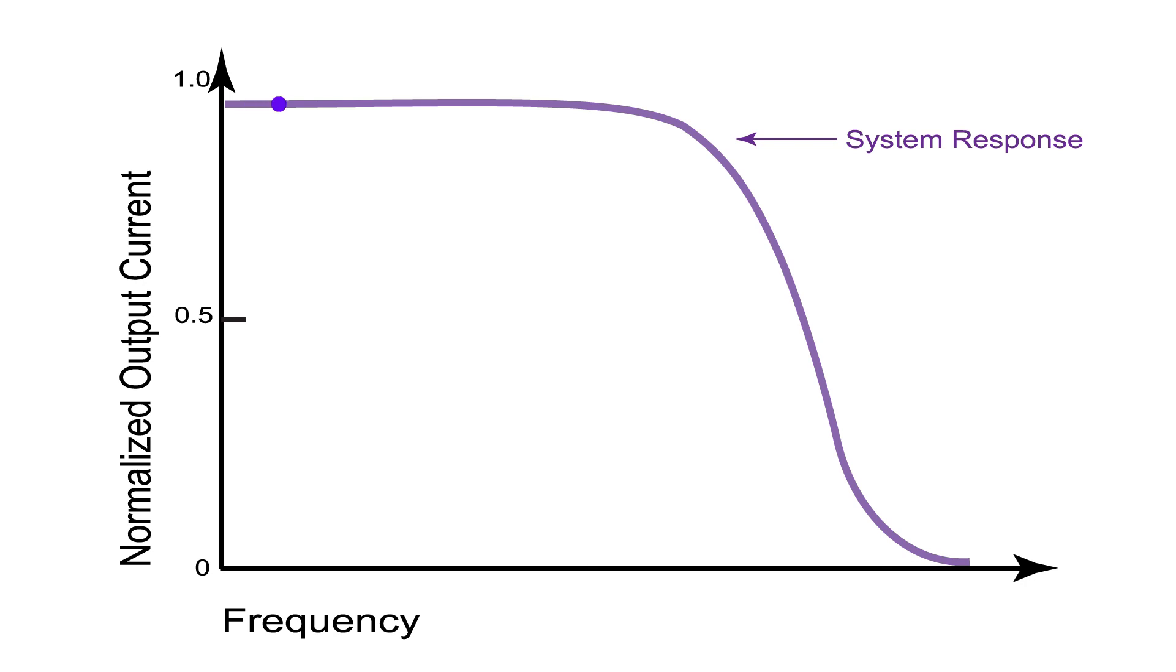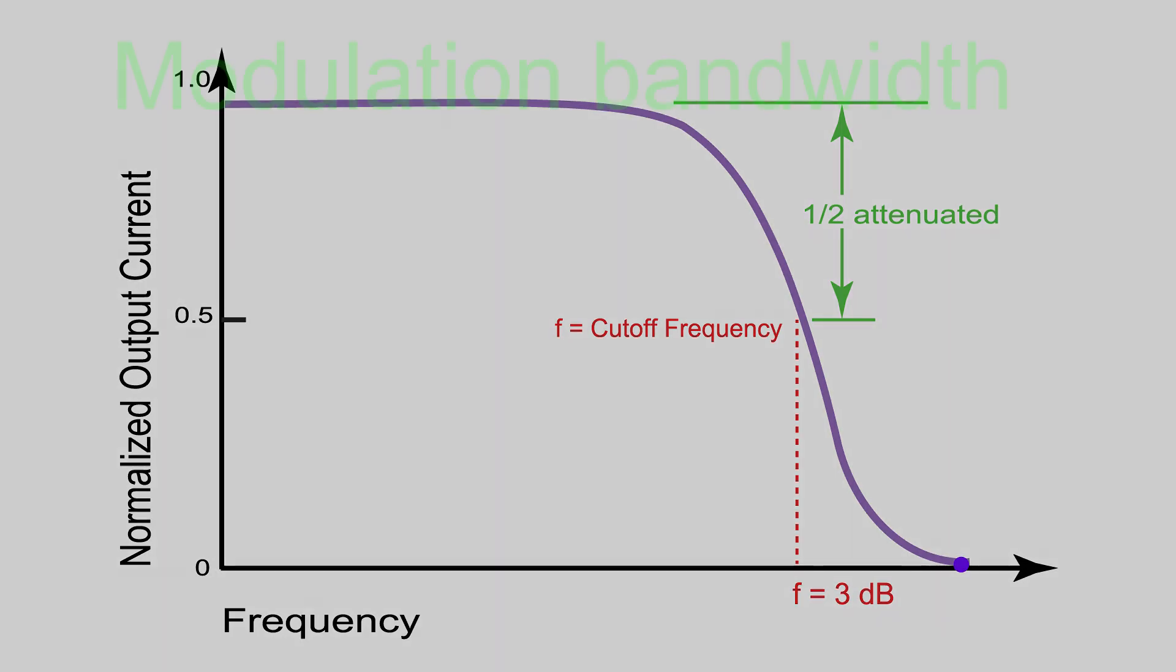A system defined by the following graph passes DC and low frequencies and rejects higher frequencies. The bandwidth is often defined by the frequency where the system response curve is half attenuated. This is called the 3 dB bandwidth, or the cutoff frequency.